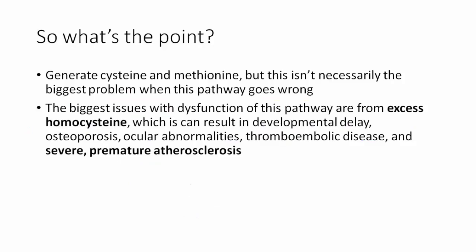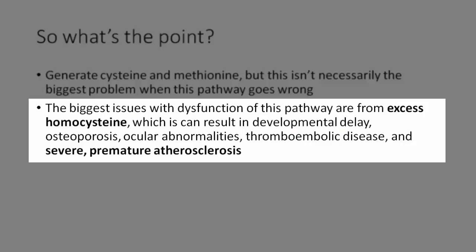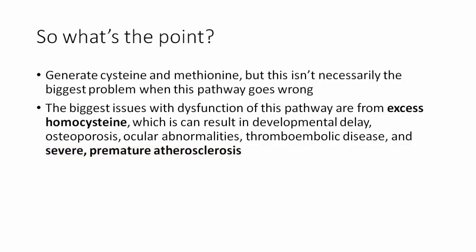The main purpose of this pathway is to get rid of homocysteine. But why? During development, if you have excess homocysteine, you can end up with developmental delay, early osteoporosis, ocular abnormalities, and thromboembolic disease, resulting in severe premature atherosclerosis. You'll see people as young as 10 to 15 developing severe complications such as heart attack and even stroke. So in terms of either problems or treatment, you need to figure out ways to get rid of homocysteine.